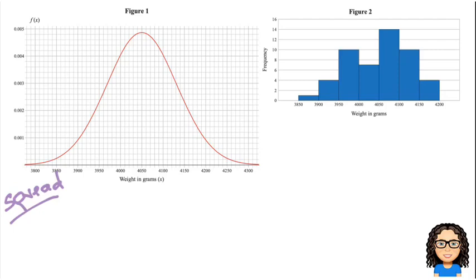So in terms of measuring spread, we can talk about the range, we can talk about the interquartile range, or we can talk about the standard deviation. So there's three different ways to measure spread. So if I was to look at the range, I can say, well, for the theoretical one, the range is approximately 3,800 to 4,100.